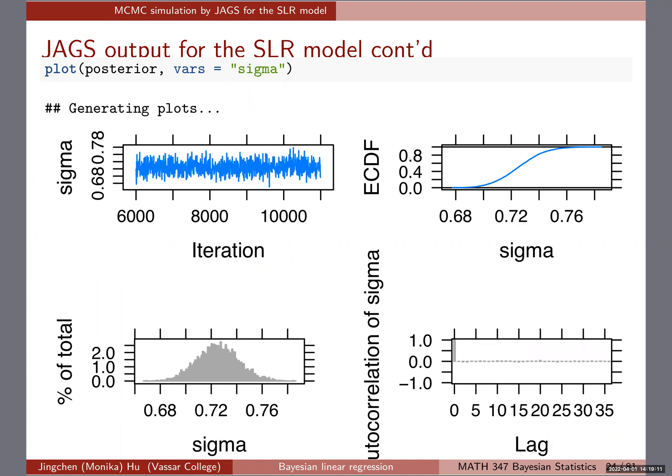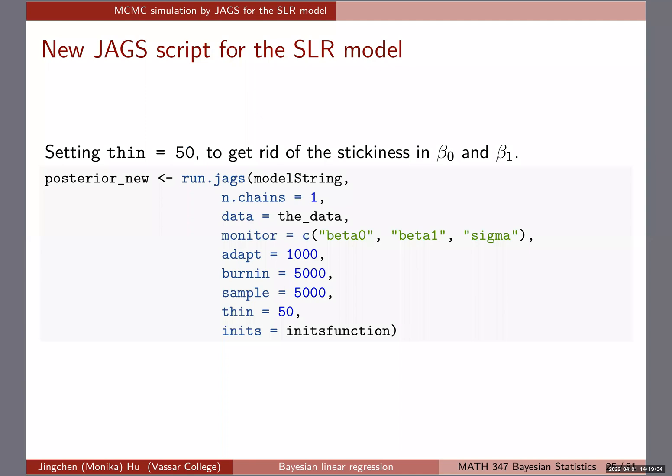Sigma, as we saw earlier, had a pretty good effective sample size and is really exploring the parameter space well. However, for MCMC diagnostics, we need all parameters to pass before we can feel comfortable that the estimation has been done properly. Because beta0 and beta1 do not seem to have done well enough, we will go back to this part.